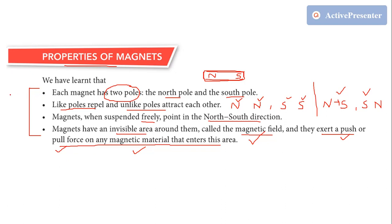So these are the four properties of magnets: first, every magnet has two poles — north pole and south pole; second, like poles repel each other and unlike poles attract each other; third, when you suspend the magnet freely it points towards north and south direction; and fourth, magnets have an invisible area called magnetic field which exerts a pulling or pushing force when any magnetic material enters that area.